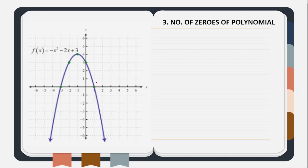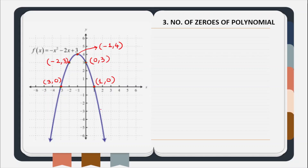When we plot the points on graph, we again get the shape of a parabola. The points are: 1 comma 0, 0 comma 3, minus 1 comma 4, minus 2 comma 3, and minus 3 comma 0. Again we have obtained the shape of a parabola, and this parabola opens downward. So we can conclude that when the coefficient of x square is negative, the parabola opens downward.